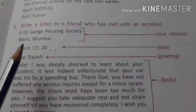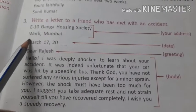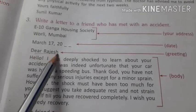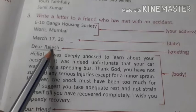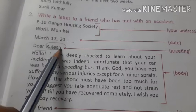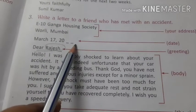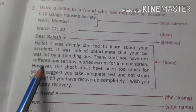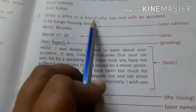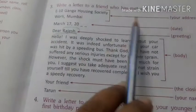So when we write an informal letter, on the left hand side you are going to write your address and the date on which you are writing. This is the greeting: Dear Rajesh. So this letter is written to Rajesh — you can write your friend's name here. Here you write your address, here you write the date. Then this is the body of the letter — the content about your friend who has met with an accident.